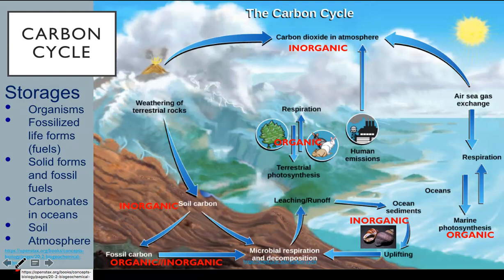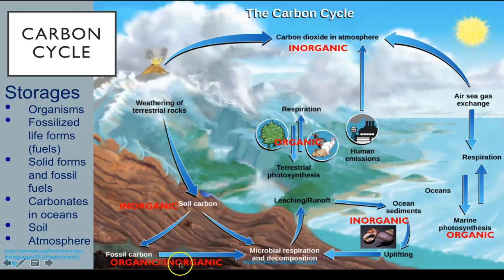In the carbon cycle, stores are found in both organic and inorganic forms. Organisms on land and in the waters, including plants and forests, are an organic storage of carbon, as are fossilized life forms and fossil fuels. When fossil fuels are replaced by inorganic molecules, they become an inorganic store of carbon. Sedimentary rocks are locked up or fixed carbon stores. In the oceans, where carbon is dissolved or locked up as carbonates in the shells of marine organisms, we find additional stores of inorganic carbon.